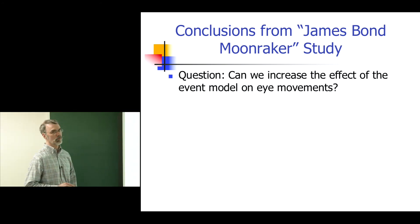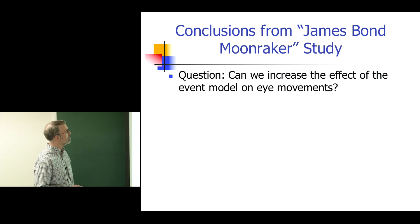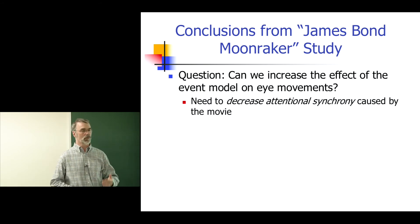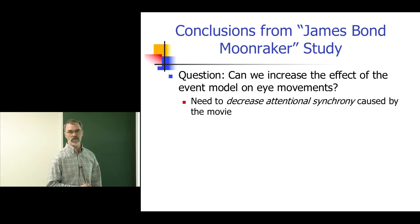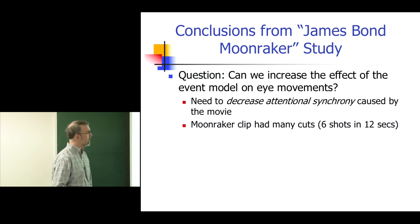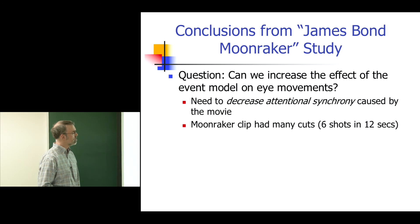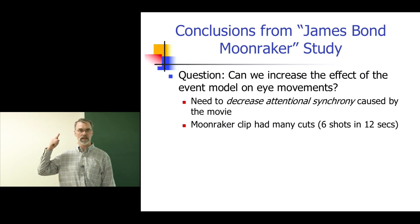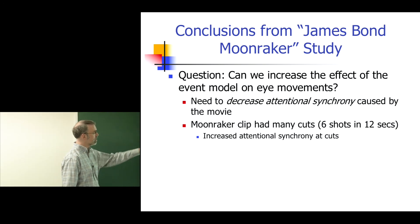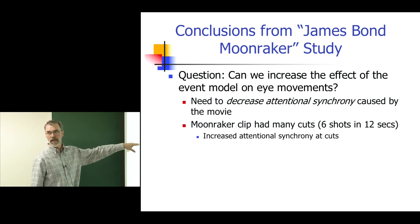This led us to raise a new question: can we increase the effect of the event model on eye movements? To do that, we need to decrease the attentional synchrony caused by the movie stimulus itself. The Moonraker clip had many cuts — six shots in 12 seconds, basically one cut every two seconds — and we know there is increased attentional synchrony at cuts.